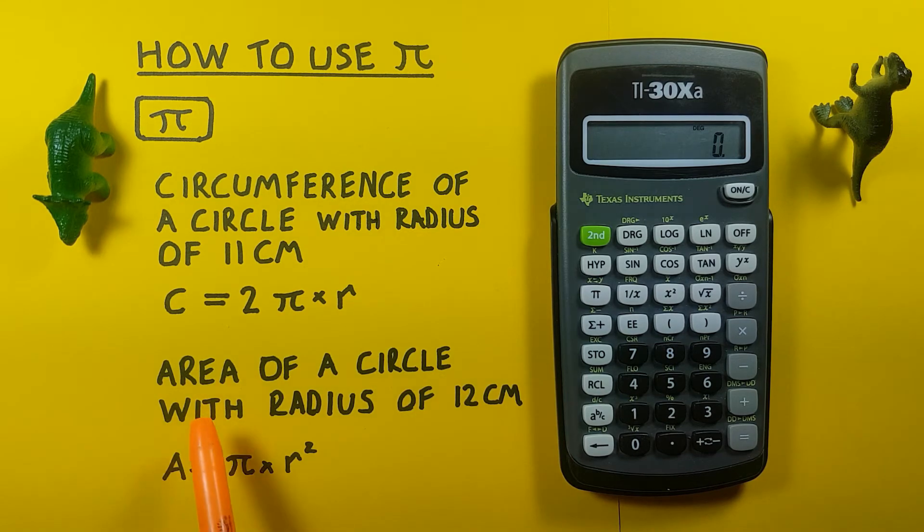Another example would be finding the area of a circle with a radius of 12 cm. We would use this formula: A = πr². Again, we know our radius is 12.